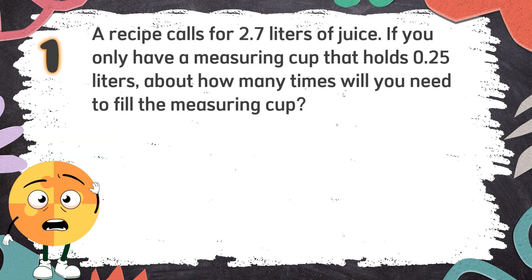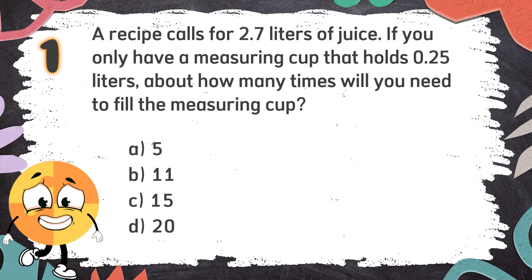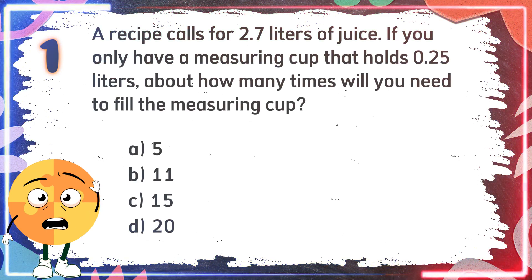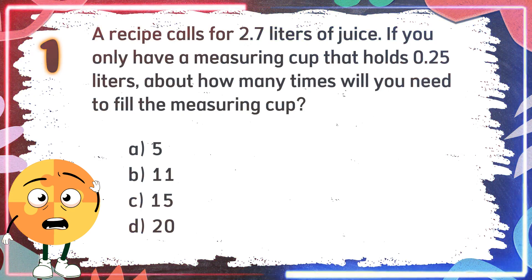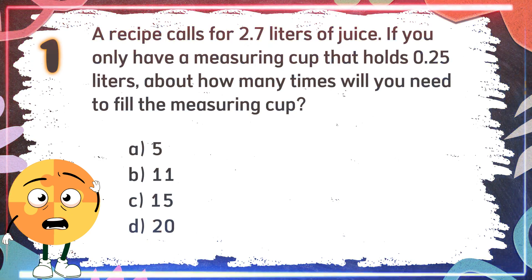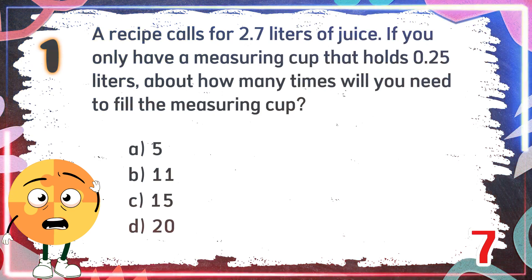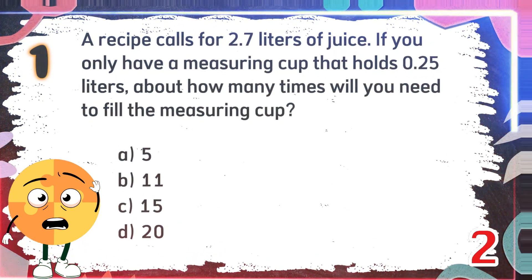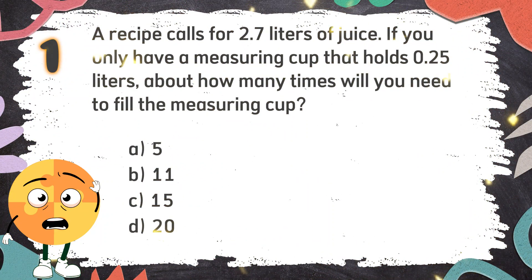Number 1: A recipe calls for 2.7 liters of juice. If you only have a measuring cup that holds 0.5 liters, about how many times will you need to fill the measuring cup? Again, a recipe calls for 2.7 liters of juice. If you only have a measuring cup that holds 0.5 liters, about how many times will you need to fill the measuring cup? The choices are: A. 5, B. 11, C. 15, D. 20. The correct answer is B. 11.